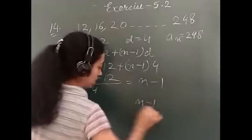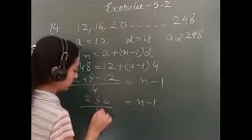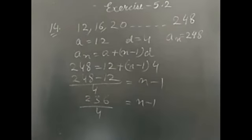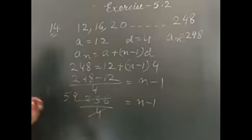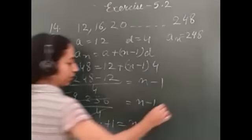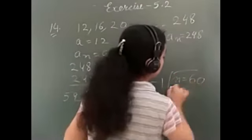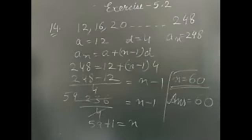Which is two forty-eight minus twelve is two thirty-six upon four. Cancel. Fifty-nine. One will come this side. It will be added to fifty-nine. So, fifty-nine plus one is the value of n. So, we can say that n is sixty means there are total sixty such numbers which lie between ten and two fifty and are divisible by four. Clear?